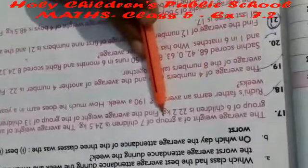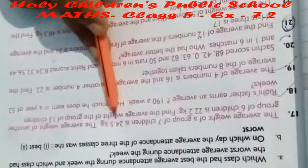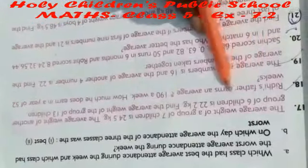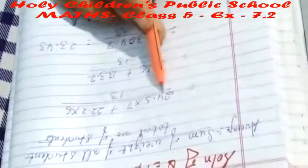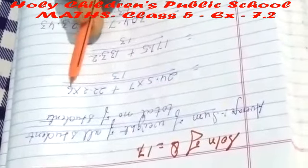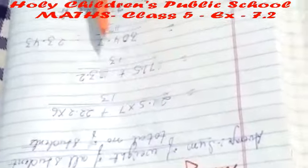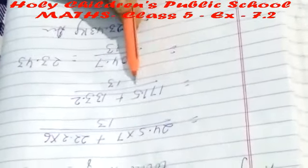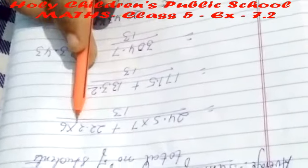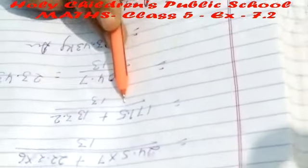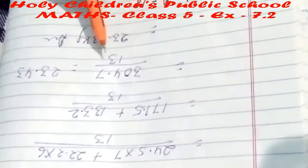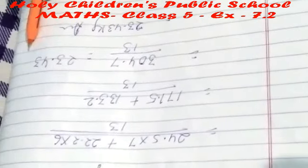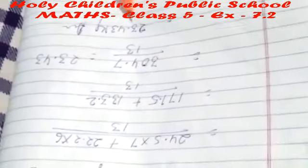Question number 17: the average weight of a group of 7 children is 24.5 kg. The average weight of another group of 6 children is 22.2 kg. Find the average weight of all 13 children. We use the formula: (24.5 × 7 + 22.2 × 6) ÷ 13. 24.5 × 7 = 171.5, and 22.2 × 6 = 133.2. Adding these: 304.7 ÷ 13. When we divide, the result is 23.43 kg.